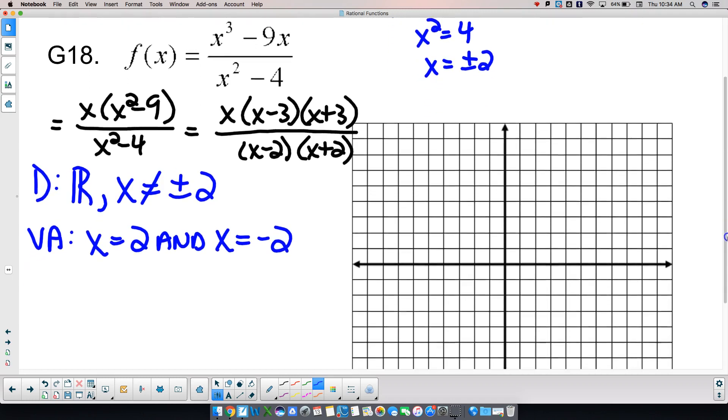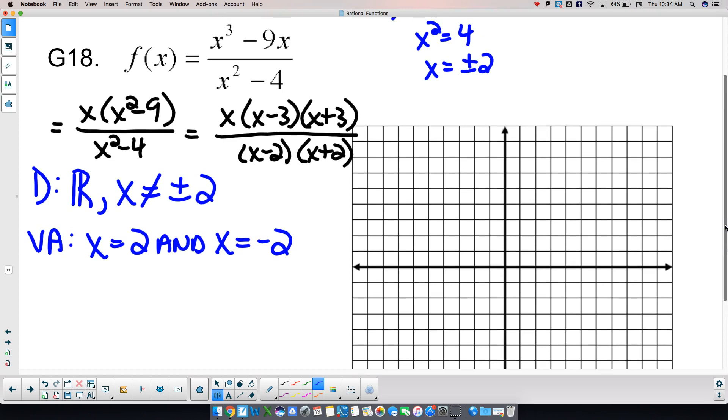Degree of the top. Three. Degree of the bottom. Two. Big over small means what? None for horizontal asymptotes. However, what? There's a slant asymptote because they differ by 1. So they differ by 1. There's a slant asymptote. So that'll come back later.